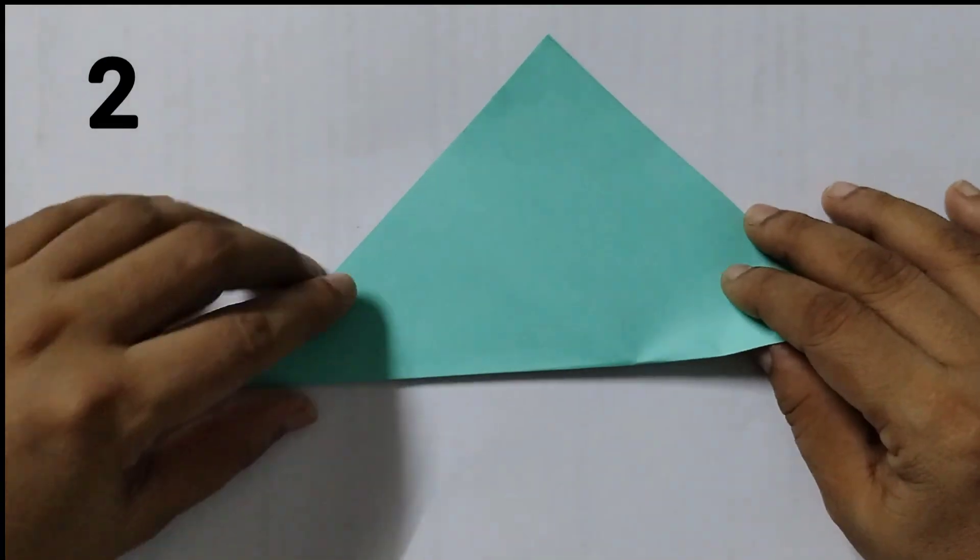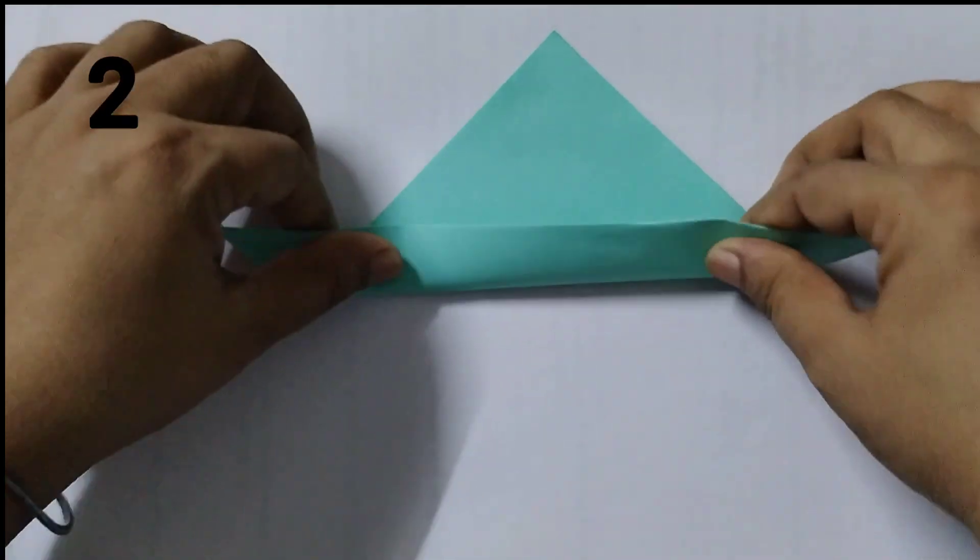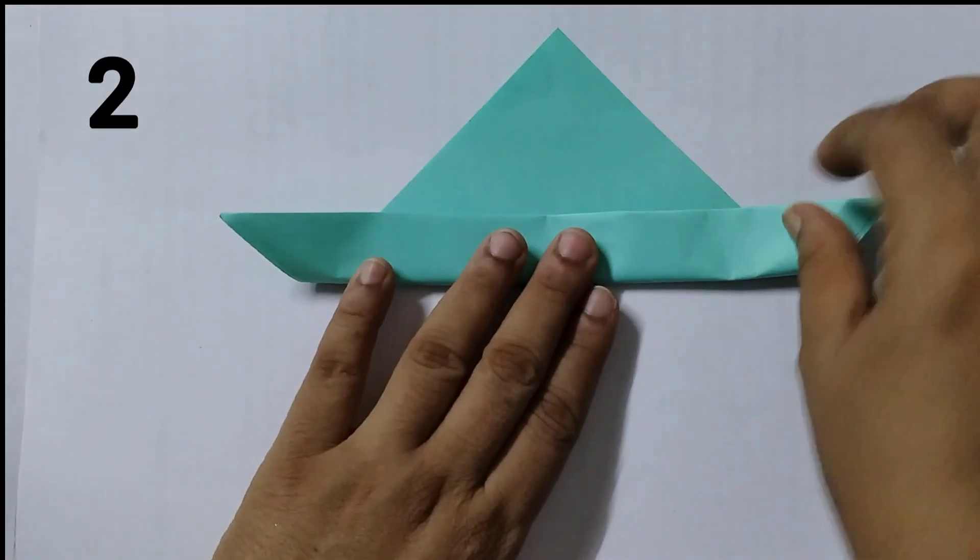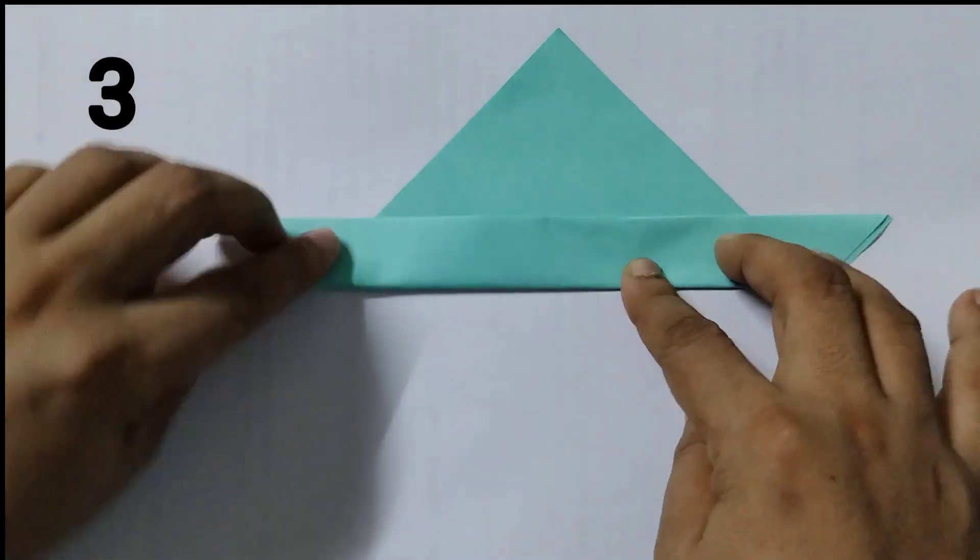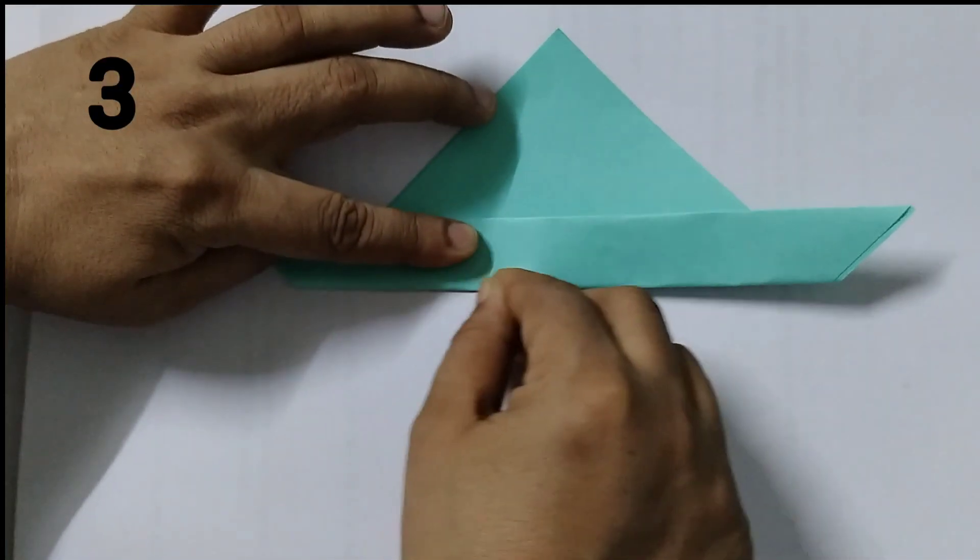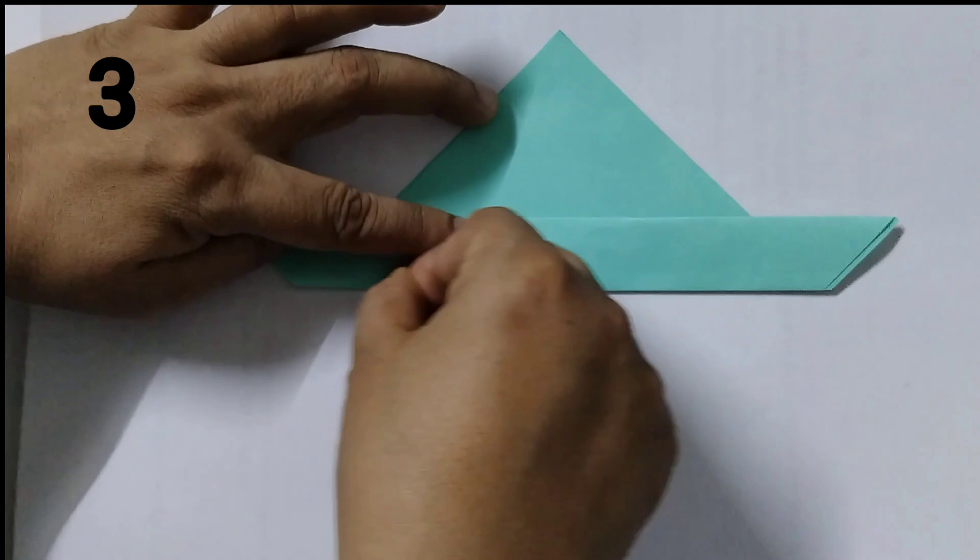Next step you keep it like this and you make a fold like this. Like this it becomes like a boat and then again you press it hard so that you get proper crease when you open it up.